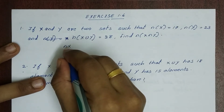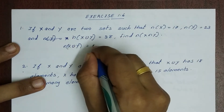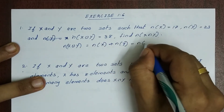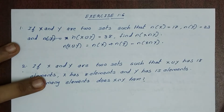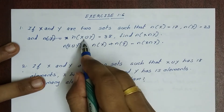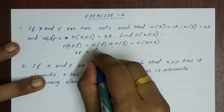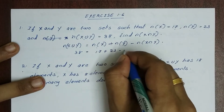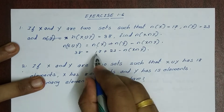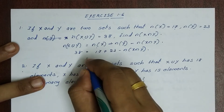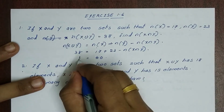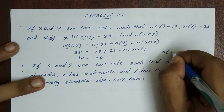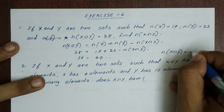The number of elements in X union Y equals the number of elements in X plus the number of elements in Y minus the number of elements in X intersection Y. So 38 equals 17 plus 23 minus the number of elements in X intersection Y. That gives 40 minus 38, so the number of elements in X intersection Y is equal to 2.